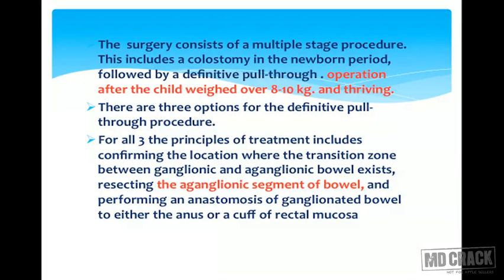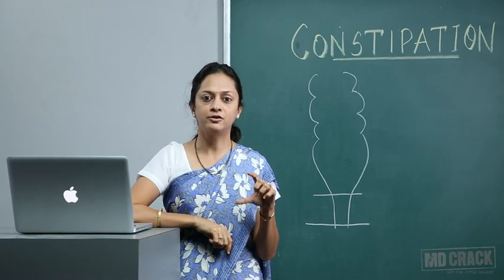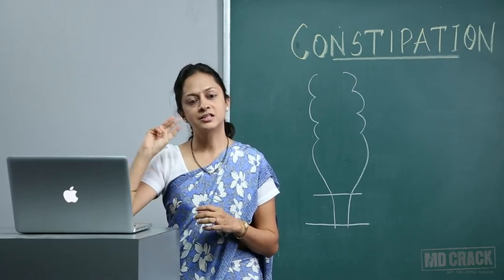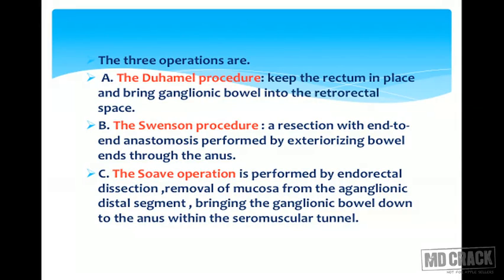Surgery consists of a multi-stage procedure: colostomy in the newborn period followed by a definitive pull-through operation, performed after the child has reached 8–10 kg. There are three options for definitive pull-through procedures. The principle for all three is the same: confirm the transition zone between ganglionic and aganglionic segment, resect the aganglionic segment, and perform anastomosis from normal colon to rectum or anus.